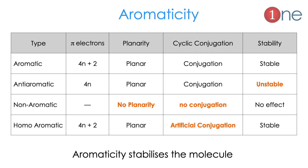Anti-aromatic means the same thing, only 4n pi electrons are present, but the system is very much unstable. Non-aromatic systems are mostly non-planar, which is why conjugation is affected. It doesn't have any effect on stability. The last and very rare one is homo-aromatic, which is similar to the aromatic system but the conjugation is created artificially, and it stabilizes the system.